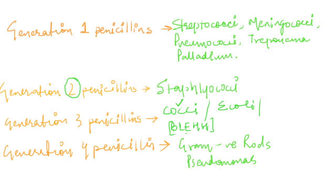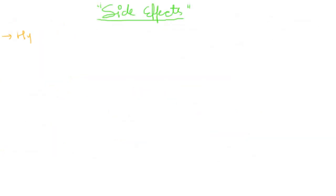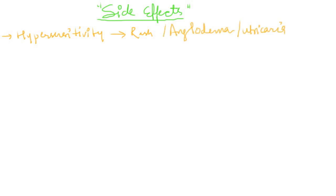Now we'll cover the side effects of penicillin. The first important side effect is hypersensitivity reactions, which may present as rash or more serious reactions like angioedema and urticaria. The next important side effect is GI distress, presenting as nausea, vomiting, or diarrhea. This occurs because oral antibiotics interact with the natural microbes in our alimentary canal, causing dysregulation of the gut microbiome.